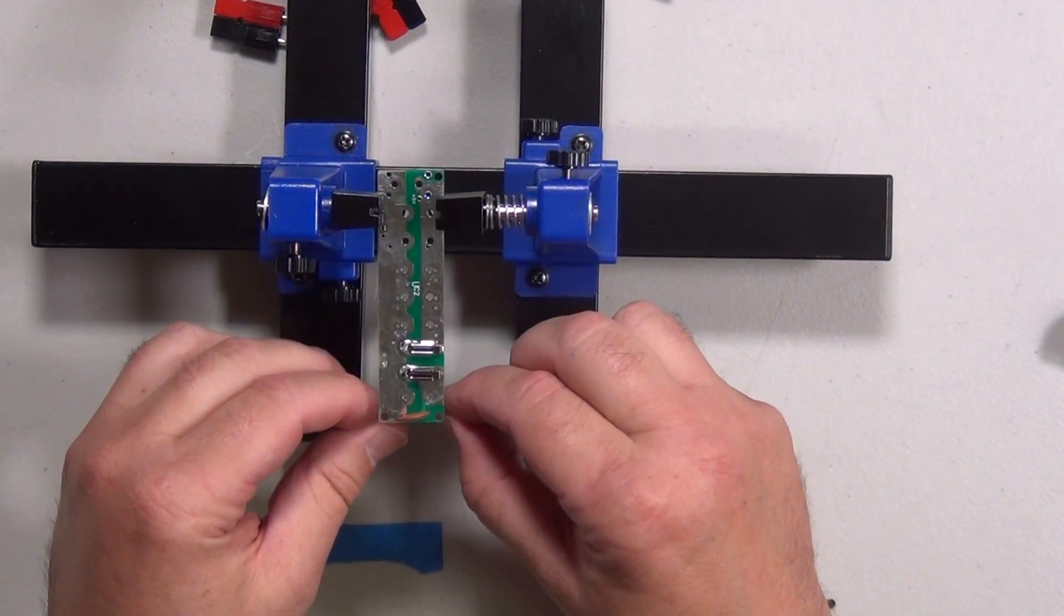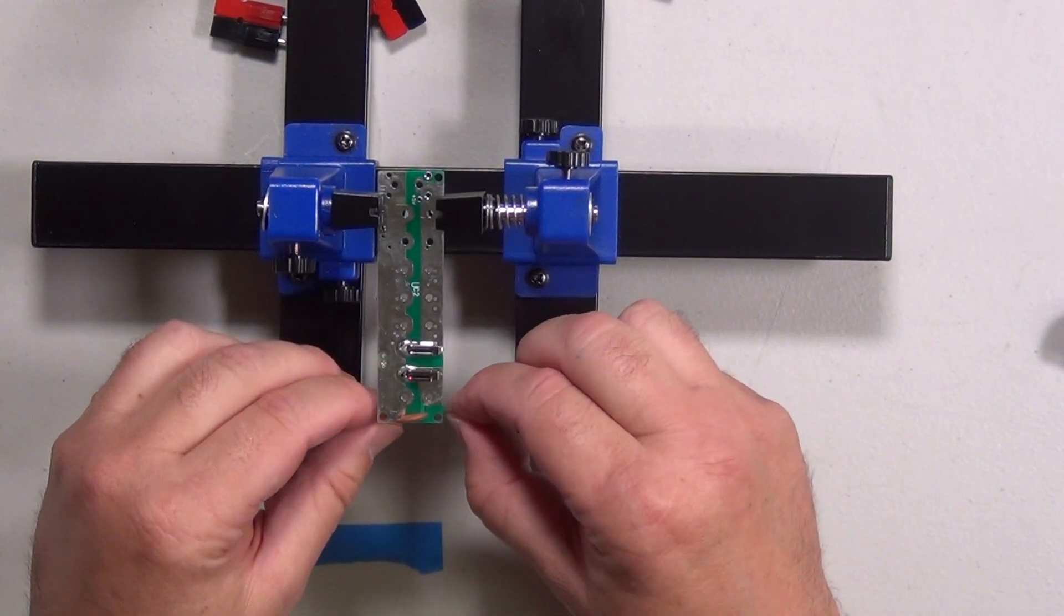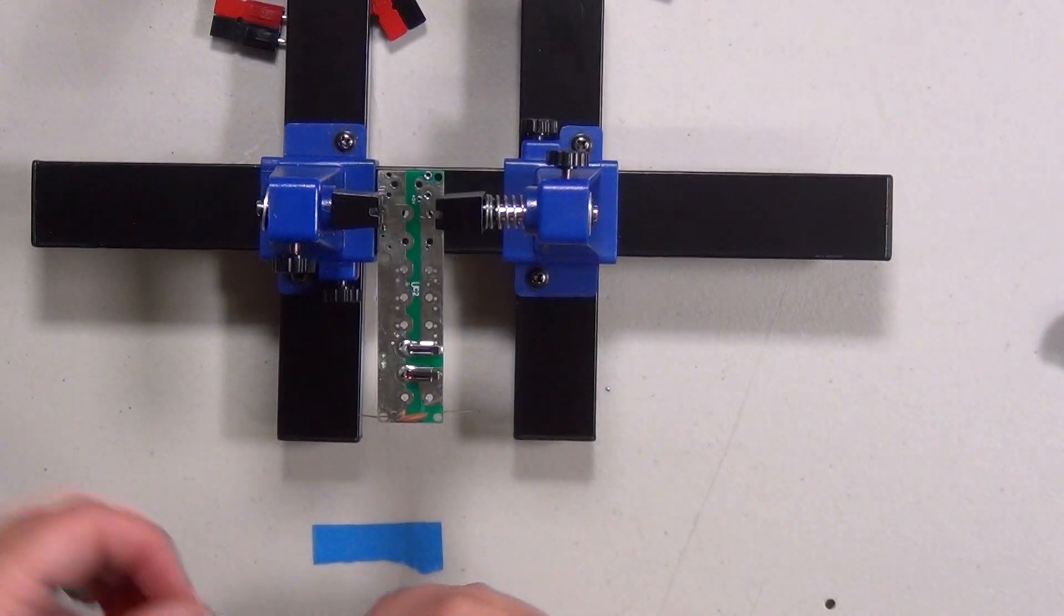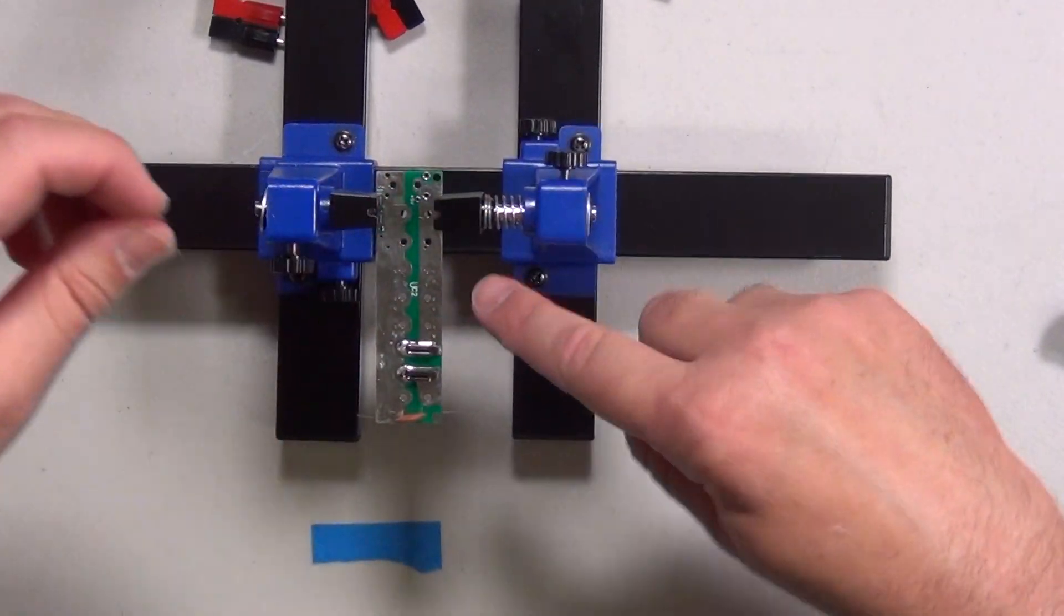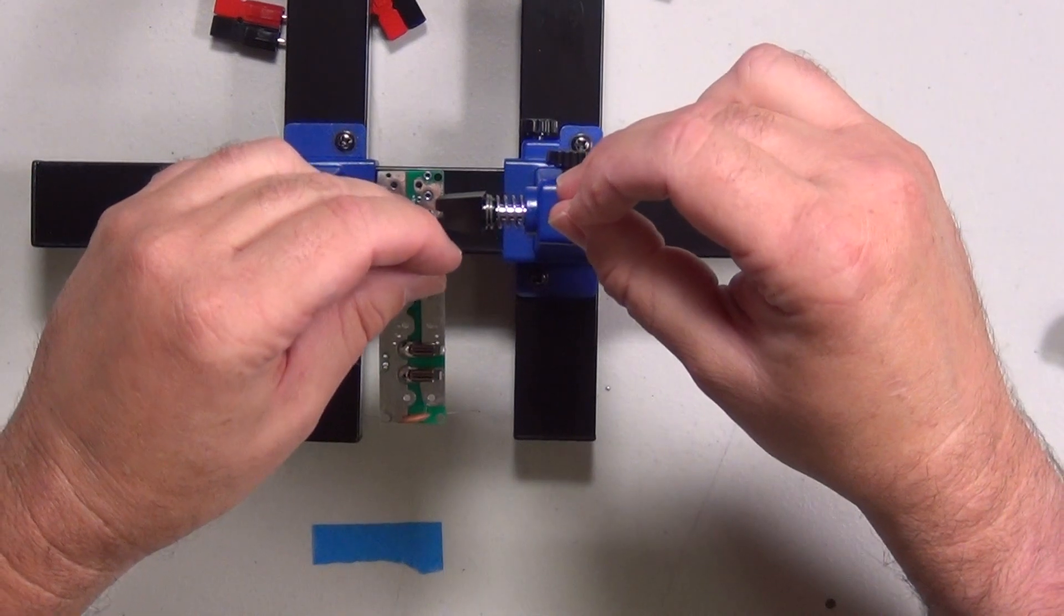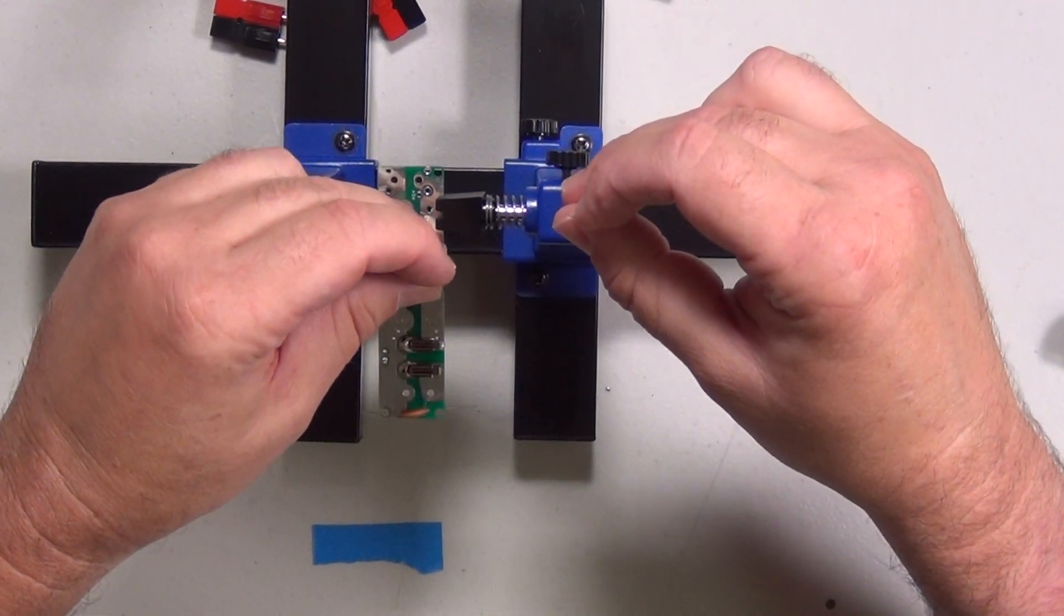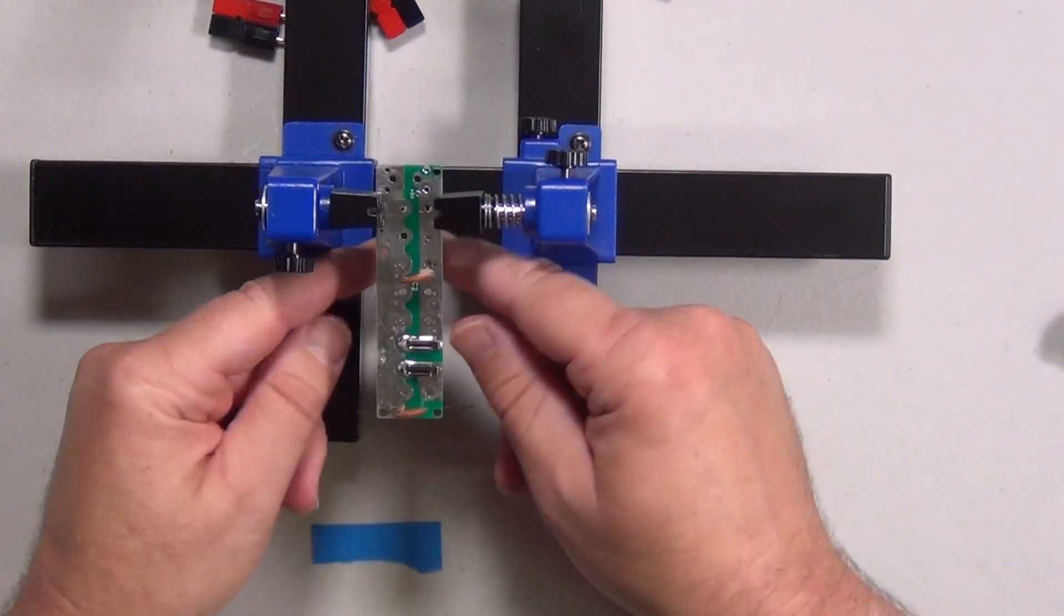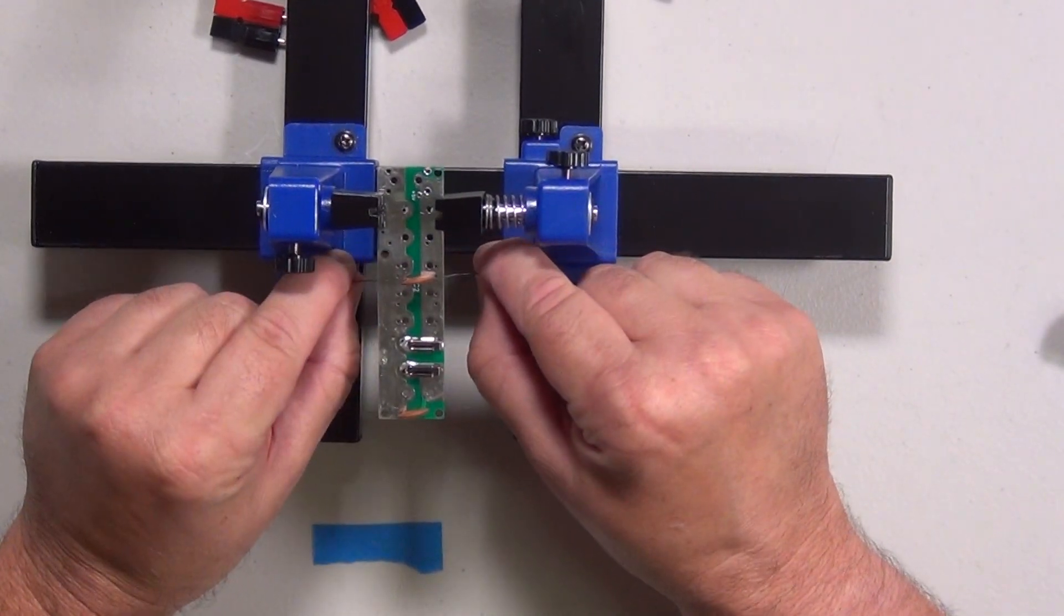And you can spread out the legs a little so that it'll hold it in place. And then the second one goes up here by where it says UC2. Pull out the legs a little so that it'll hold it in place.